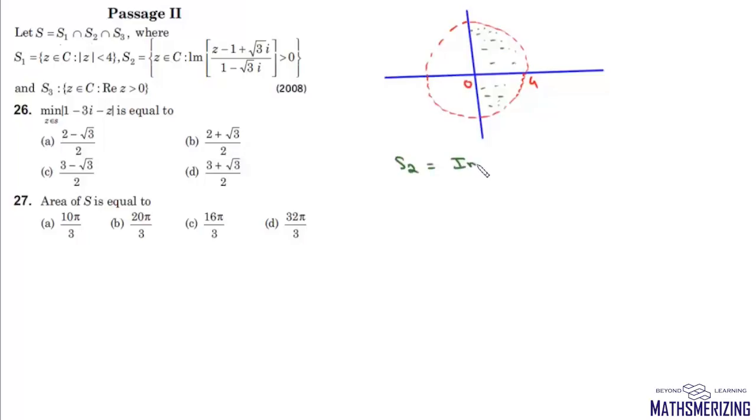Then S2, which is: imaginary part of (z - 1 + √3i)/(1 - √3i) is greater than 0. Now we need to find the imaginary part of this. It will be z/(1 - √3i) minus 1.